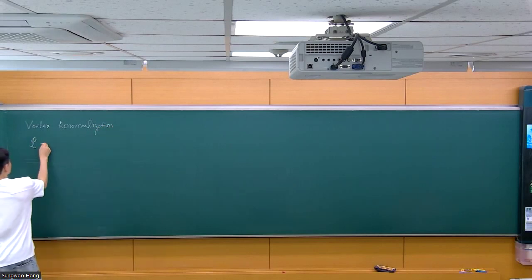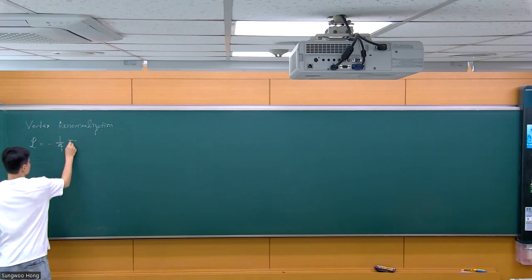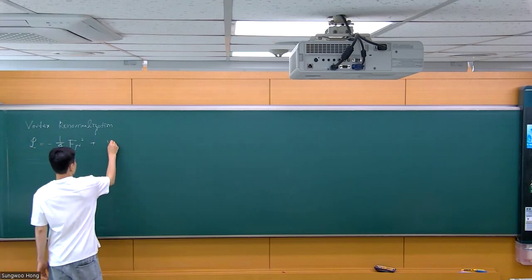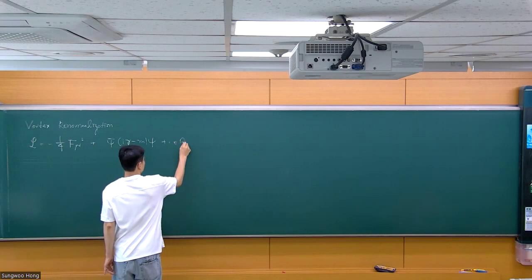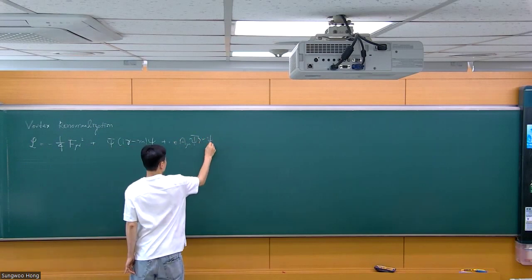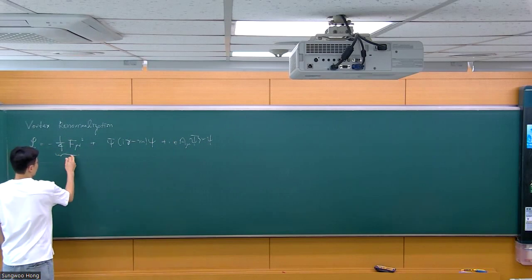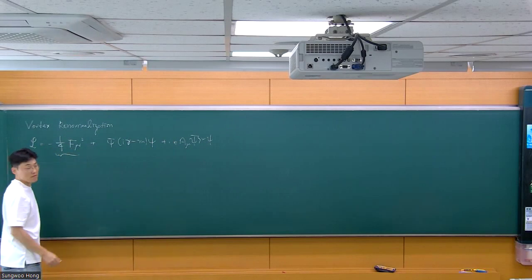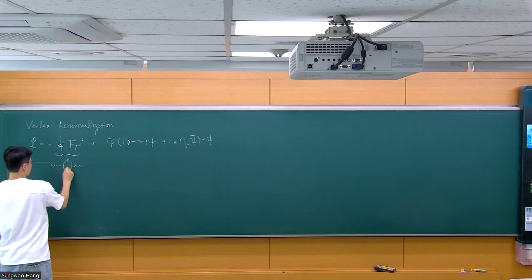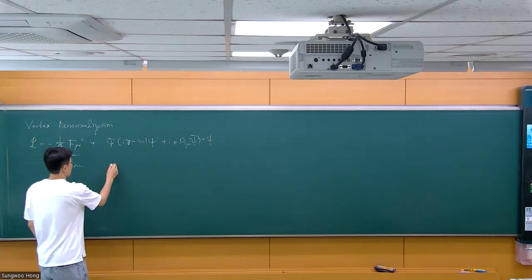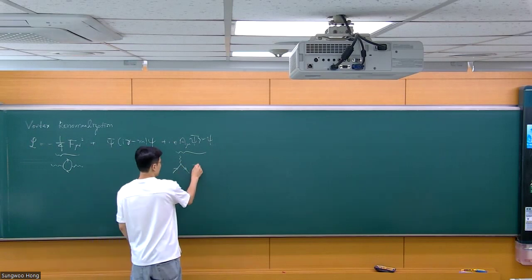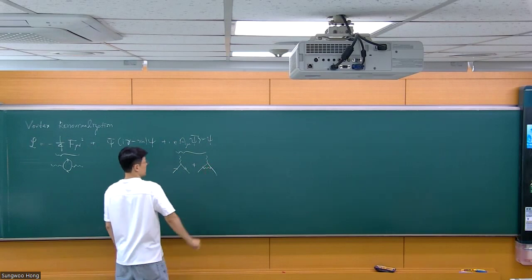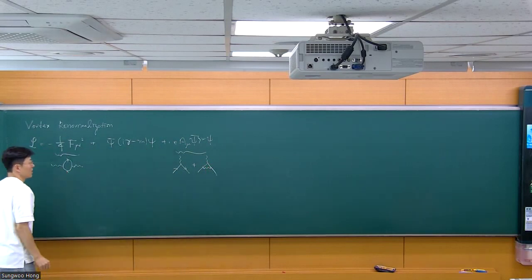We're talking about QED, so QED has a fermionic part and an interaction term. The part corresponding to the photon propagator has the relevant loop diagram which is vacuum polarization, which we have done. Right now we're talking about the vertex: photon and electron, and the relevant diagram we will study today is the vertex correction.